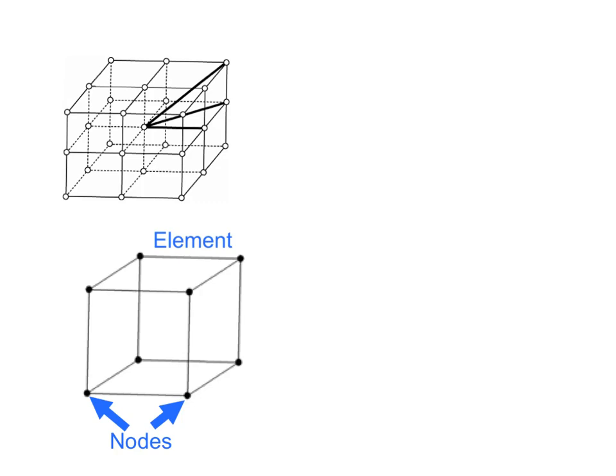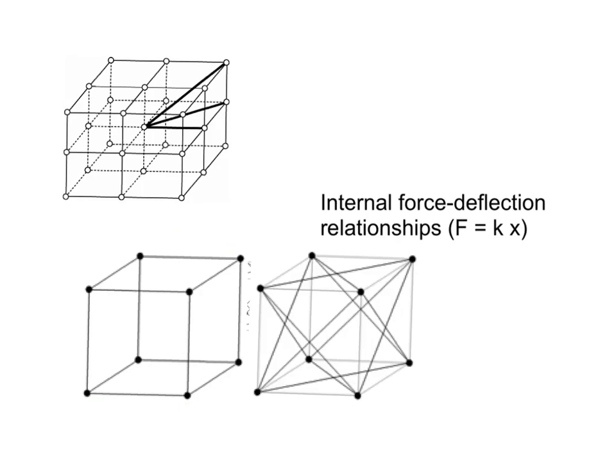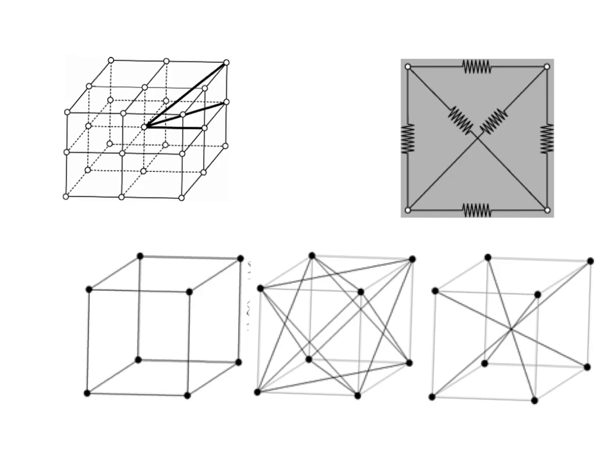So for example, here is my element where I've got the points at the corners. We call these nodes. And we establish a series of internal force deflection relationships or spring relationships using the standard F equals KΔ spring rule. So we connect all the outside corners with each other. And in addition, we're going to include diagonal corners. So basically every node in this element is connected to every other node by a type of spring.